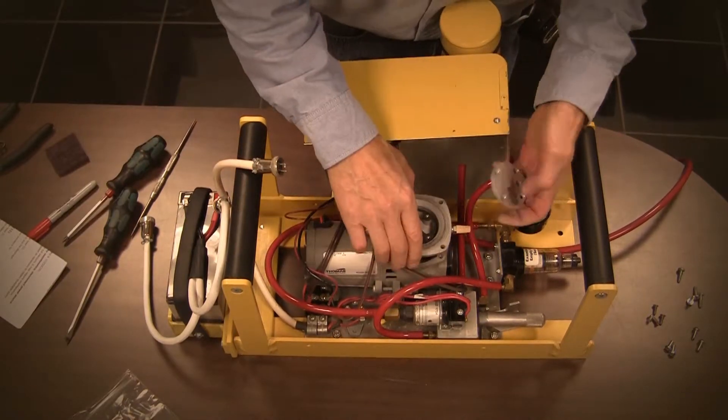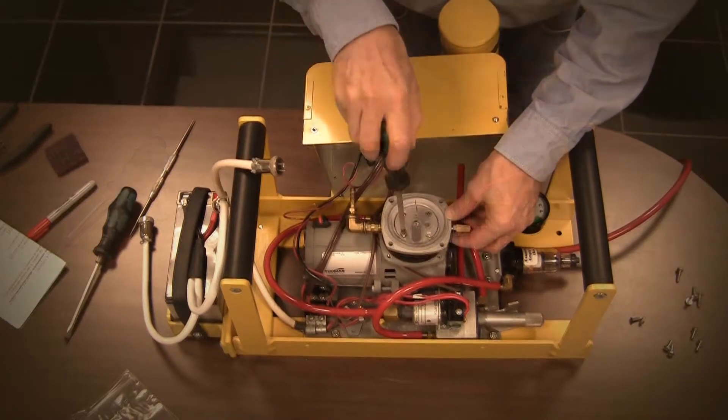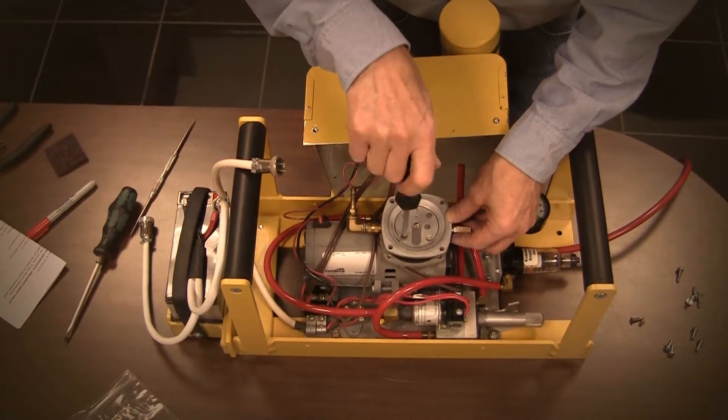Install the new gasket in the pump head and install the valve plate by aligning the mark made earlier. Secure the plate using the original four screws.